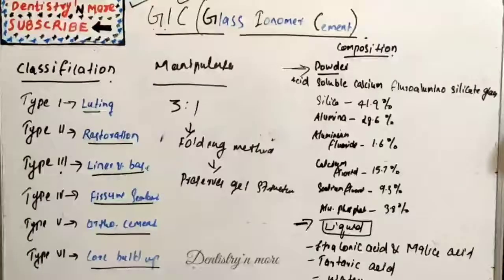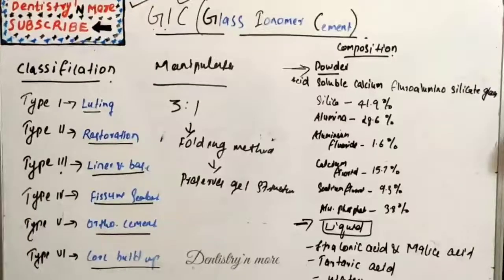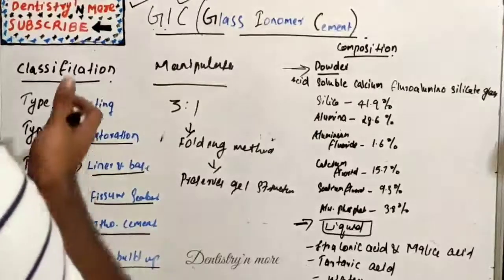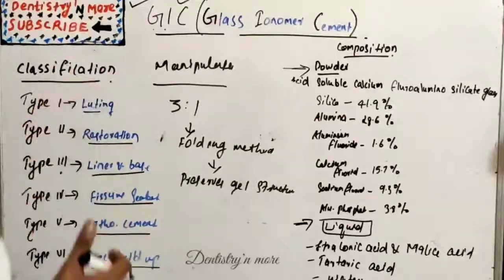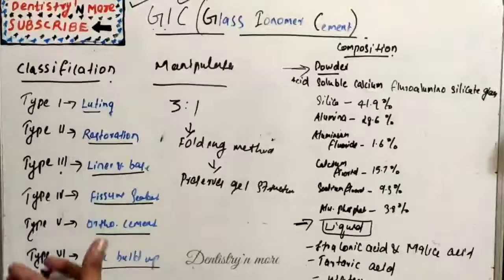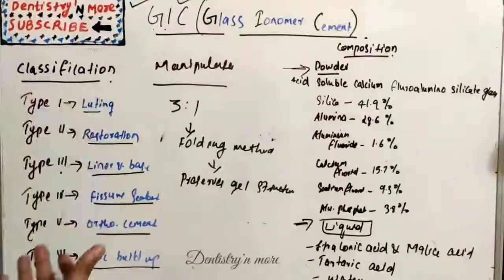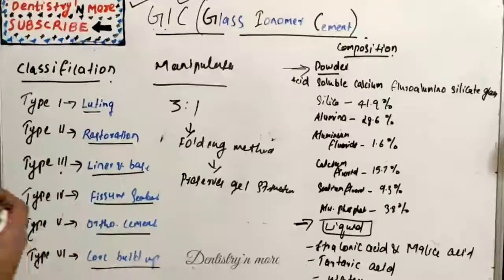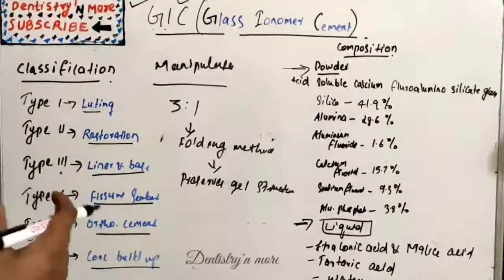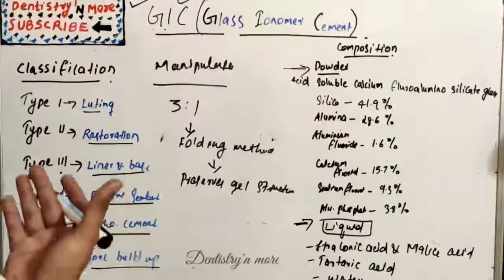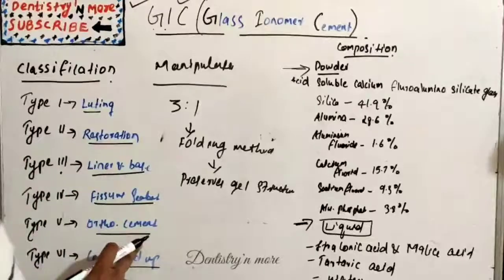Whereas the disadvantages are: low fracture resistance, low wear resistance, water sensitivity, and less aesthetic compared to composite. The uses: the classification itself gives various uses - it can be used for luting, core buildup, for eroded area, mainly for class 3 and class 5 restorations, orthodontic brackets, atraumatic restorative treatment, for lamination or sandwich technique.